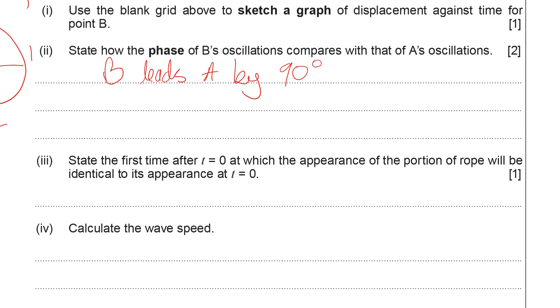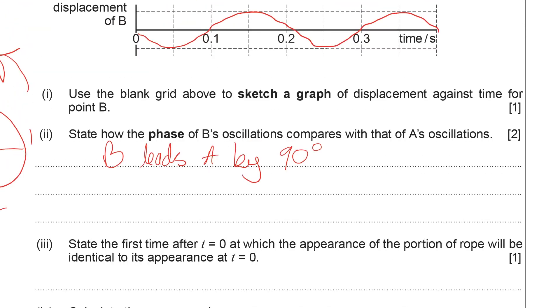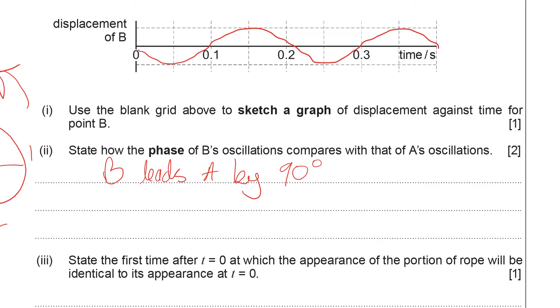We've got to state the first time after t equals 0 when the appearance of the rope will be exactly the same as it is at t equals 0 seconds. Well, if we're looking at the displacement-time graphs, we can see that one complete oscillation is completed after 0.2 seconds. That's the period of the wave, so it's going to take 0.2 seconds before the wave looks exactly the same.